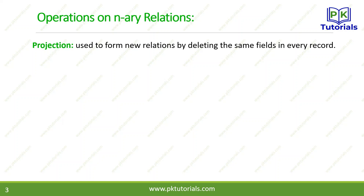The second operation is called projection. It is used to form a new relation by deleting the same fields in every record. We extract some new records from existing records by deleting certain fields across all records. Unlike selection where we retrieved complete tuples, projection takes the four-tuple records and deletes some fields according to our needs and requirements, retrieving only what we need.